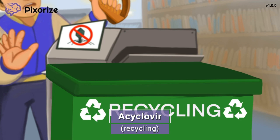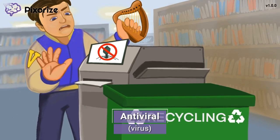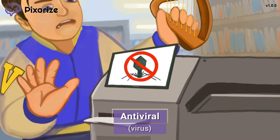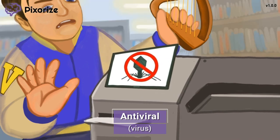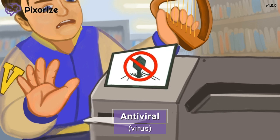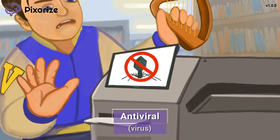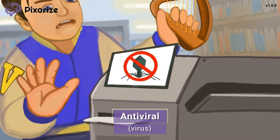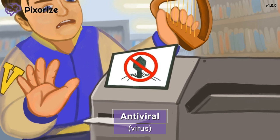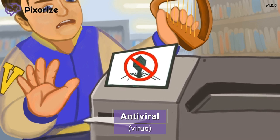Let's talk about what acyclovir does. The printer obviously isn't functioning properly — all the paper is shooting out of the printer right into the recycling bin. You'll see a symbol on the screen indicating that the printer has a virus, which must be causing the printer to malfunction. The virus here should help you remember that acyclovir is an antiviral drug, used to kill viruses and not bacteria or fungi. Another easy way to remember this is right in its name, acyclovir — that 'vir' at the end can help you remember we're talking about viruses.